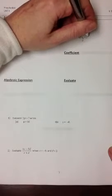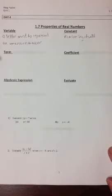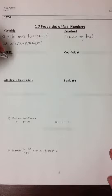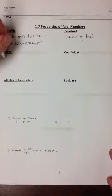A constant is a number all by itself. A term is a number and or variables that are connected only by multiplication.